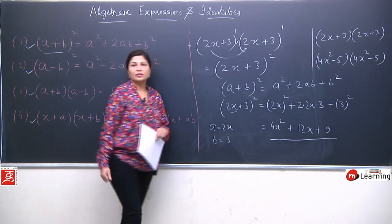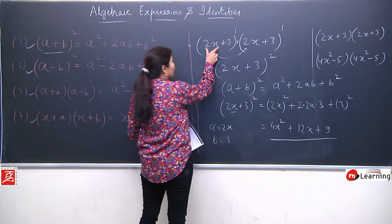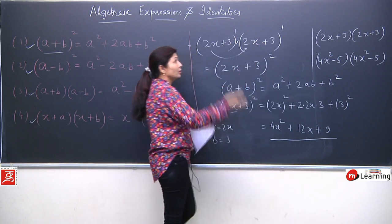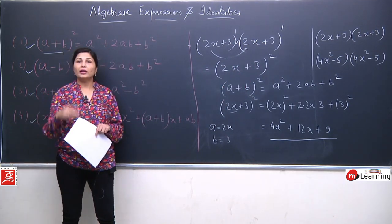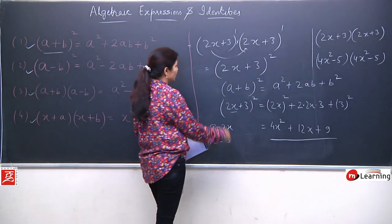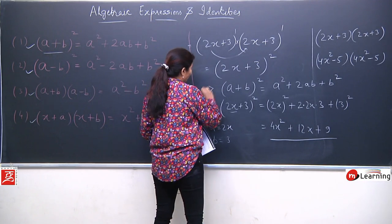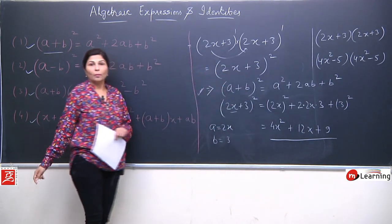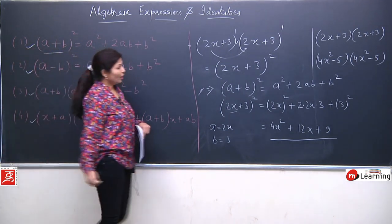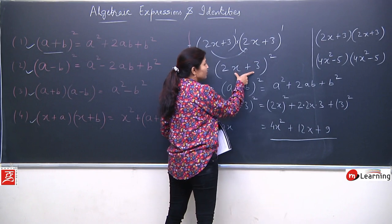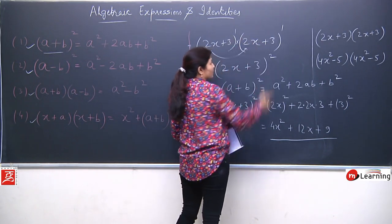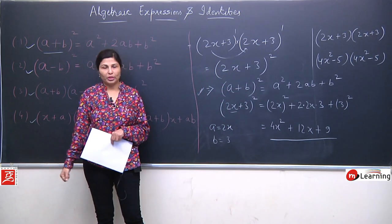Instead of the long procedure — multiplying each term with both terms, then applying distributive property, then solving — we can apply this very important identity. But before applying the identity, we must understand the nature of the question. This identity will apply when we have similar terms: here both are (2x + 3), so we can easily apply this property.